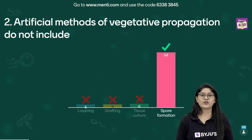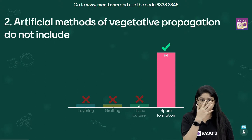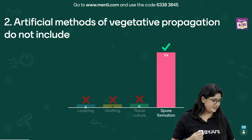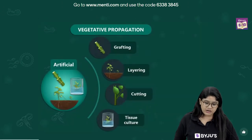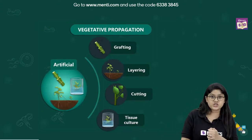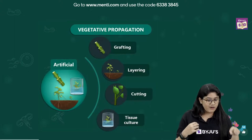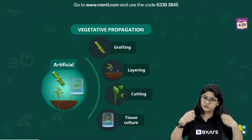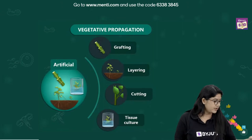Congratulations — 94 of you got the correct answer! In artificial vegetative propagation we have grafting, layering, cutting, and tissue culture. We call it artificial because it requires human involvement — it cannot happen by itself. We go there, do something, and then the magic happens.